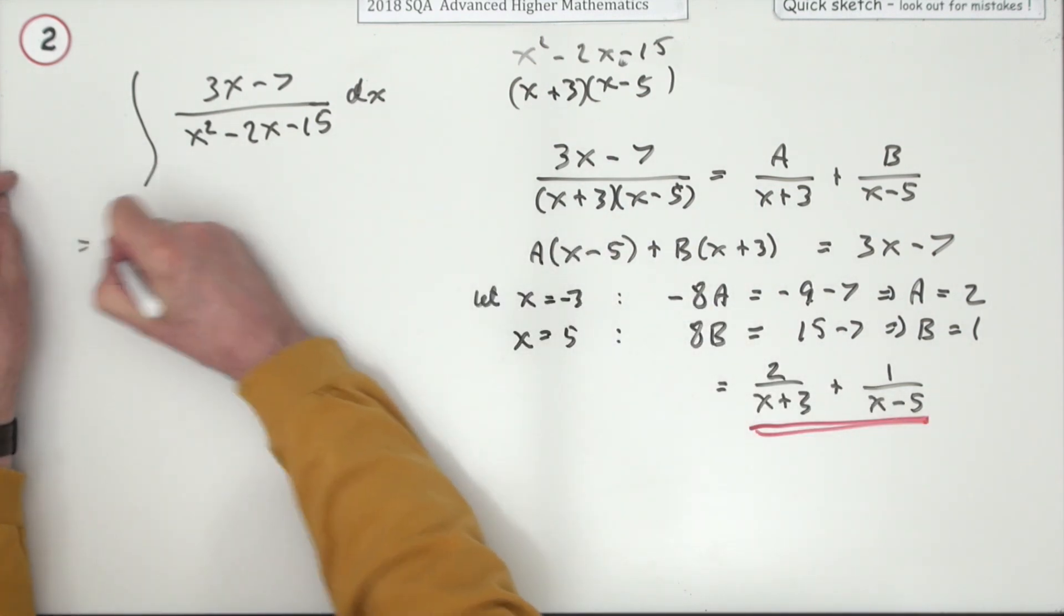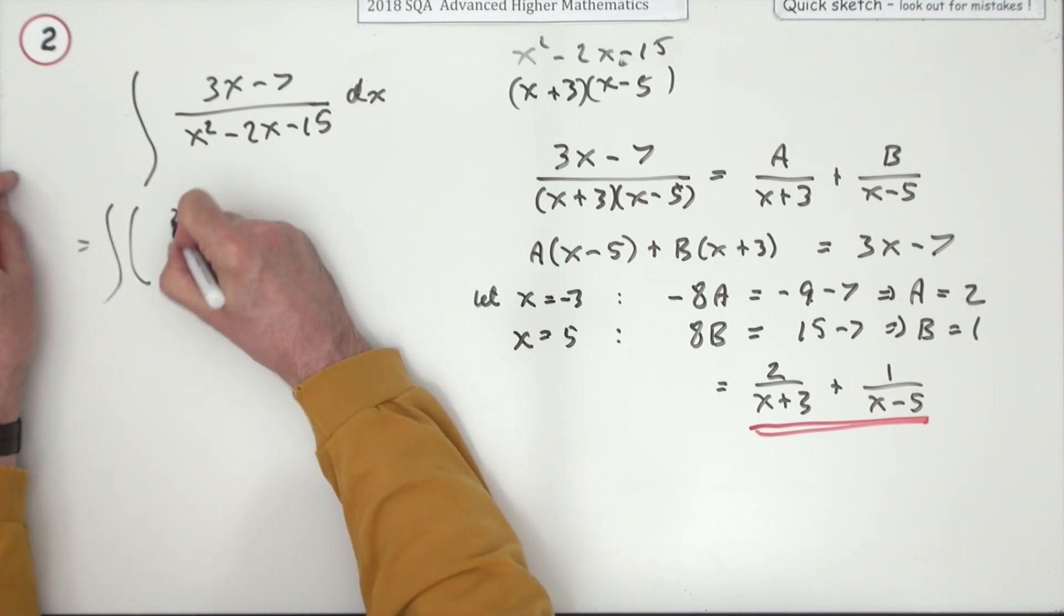Now just go back to this and put that in. So that's made up of two parts: 2/(x + 3) and 1/(x - 5).